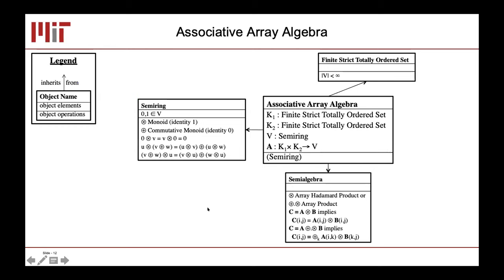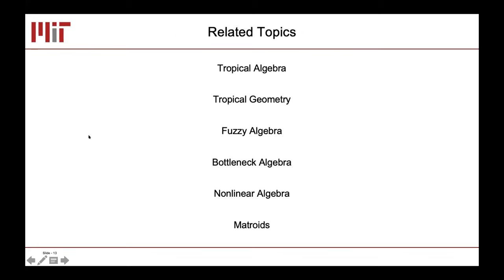There is a whole algebra of this. This UML diagram talks about what an associative array algebra is. We draw the labels from finite totally ordered sets, built on semi-algebras, and the operations are over semirings. This is a great entree into abstract algebra and understanding some of the beautiful mathematics in the abstract space.